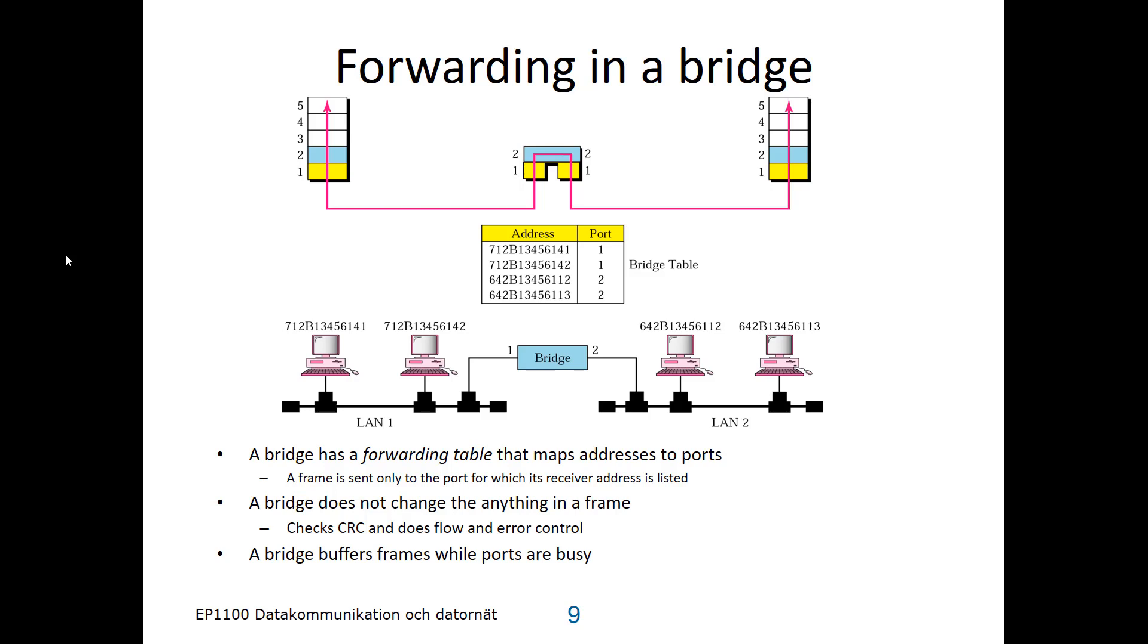It also has to check the CRC in the frame, because it cannot trust the address if the CRC has failed. And it can do flow and error control back to the sending node, but that can also be left for the receiver to do. If the link on the outgoing port is busy, then the bridge will buffer the frame.